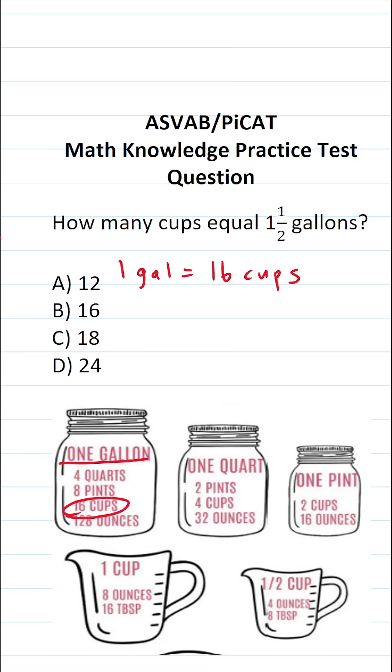That said, we want to know how many cups are in one and one half gallons. So how many cups are in half of a gallon? That's going to be 16 divided by two or eight cups in half of a gallon.